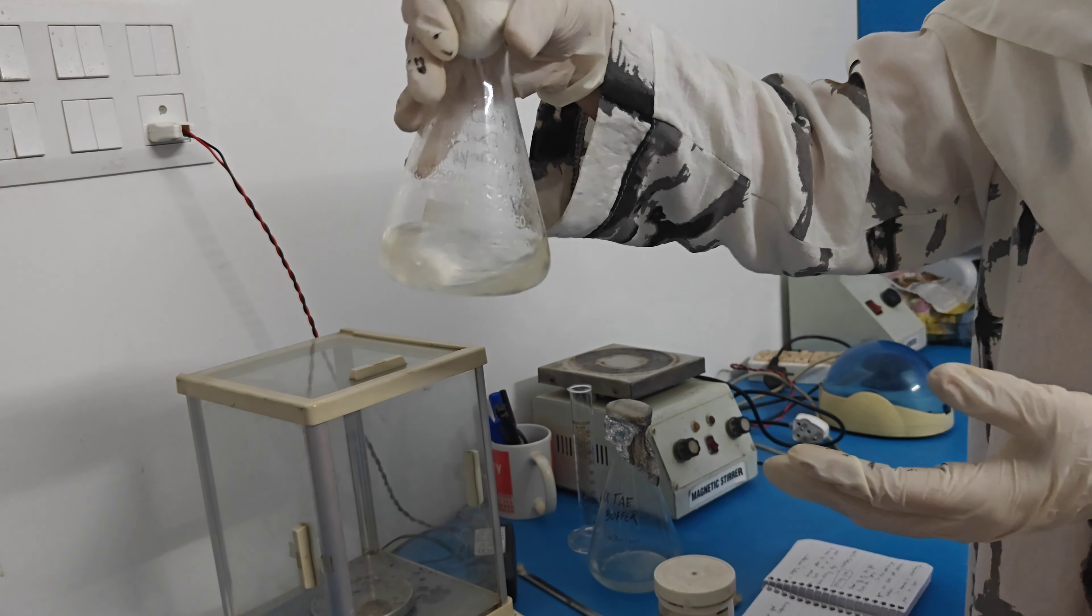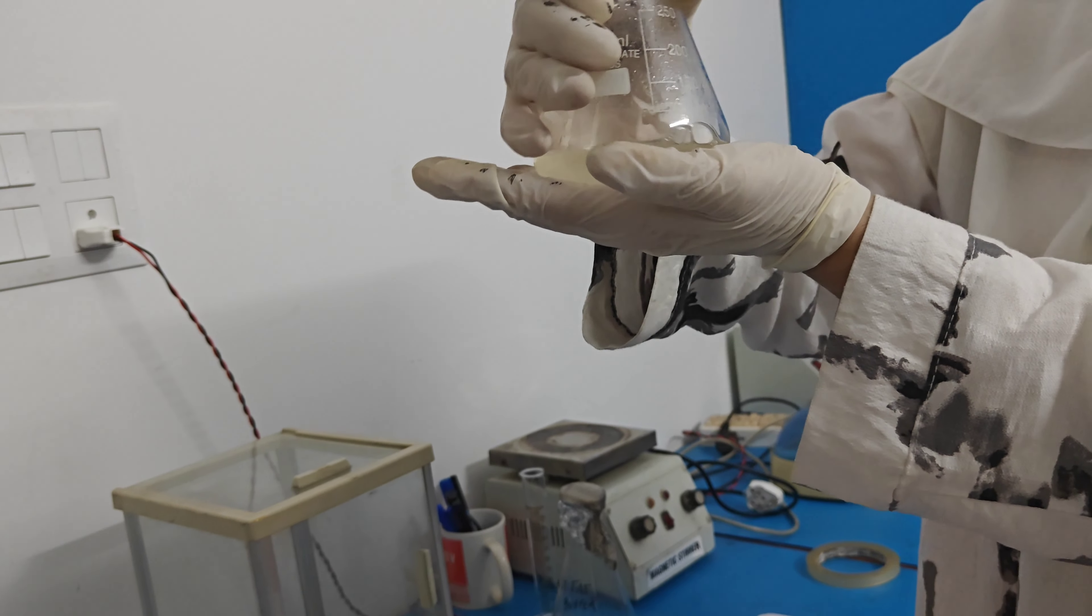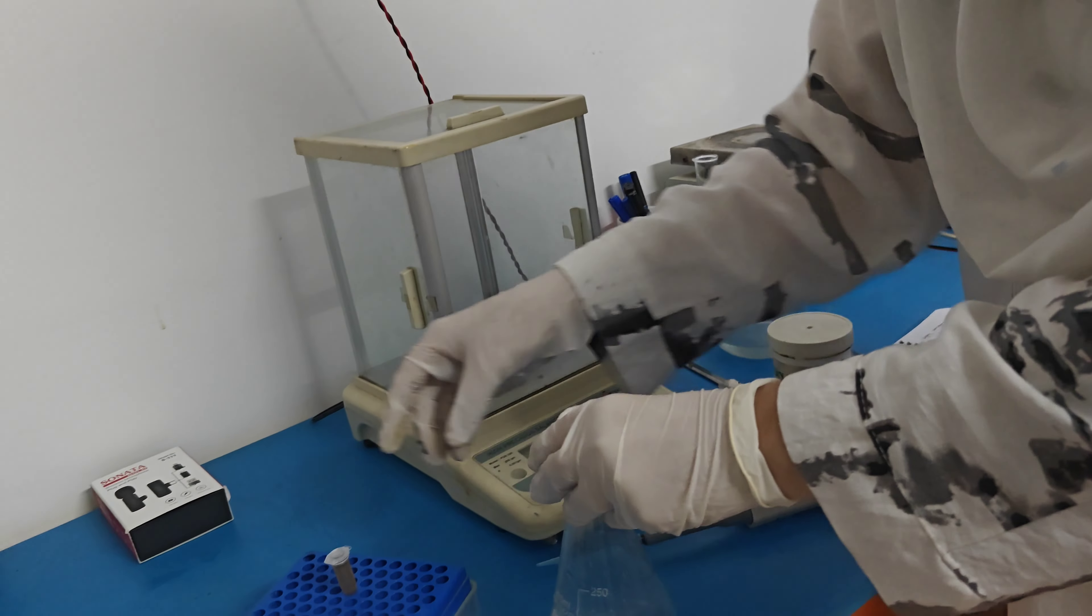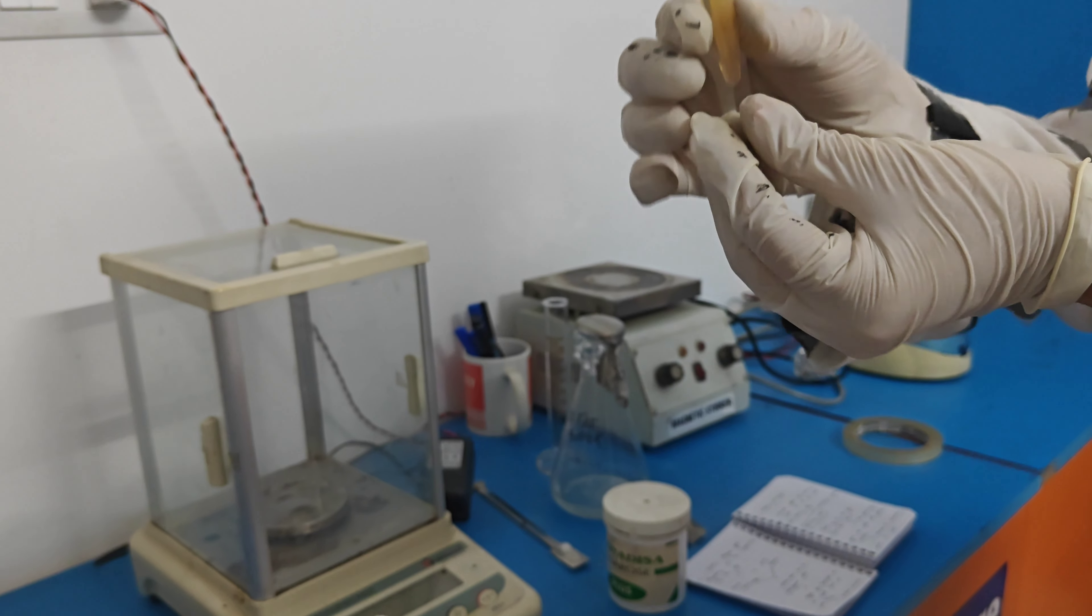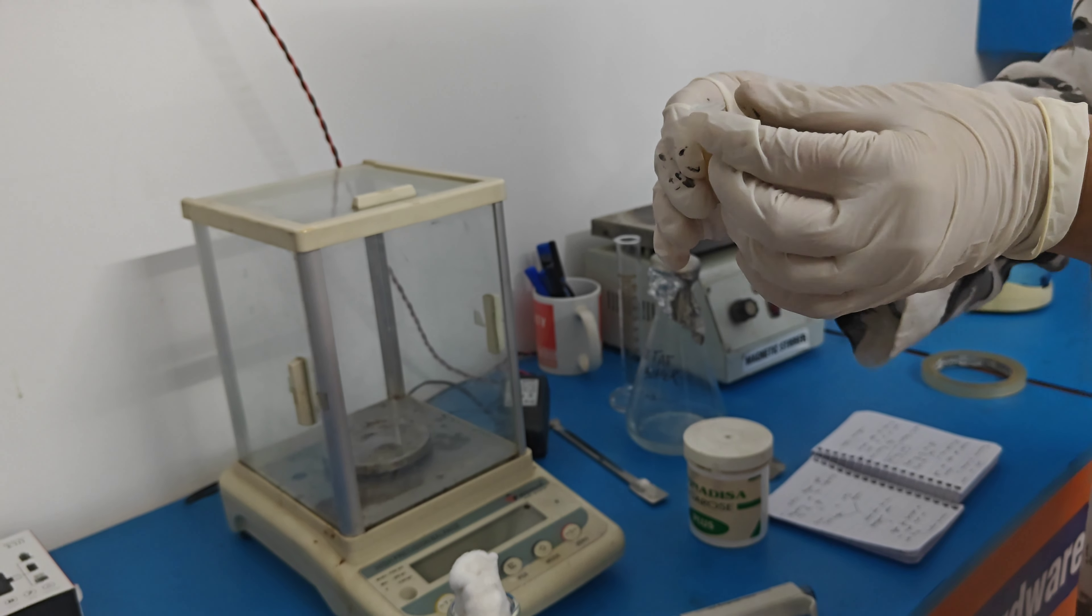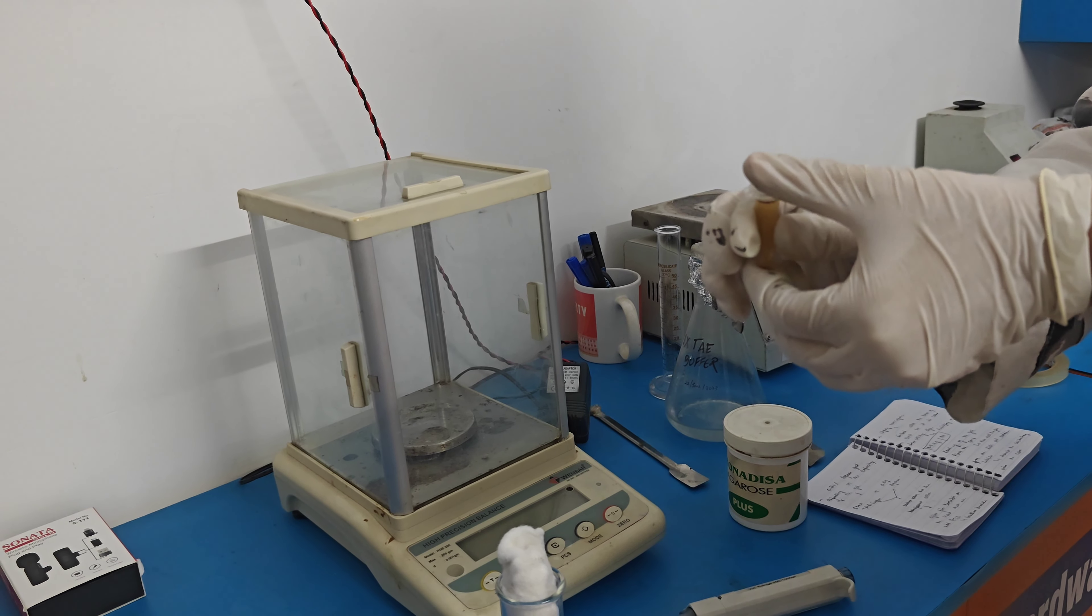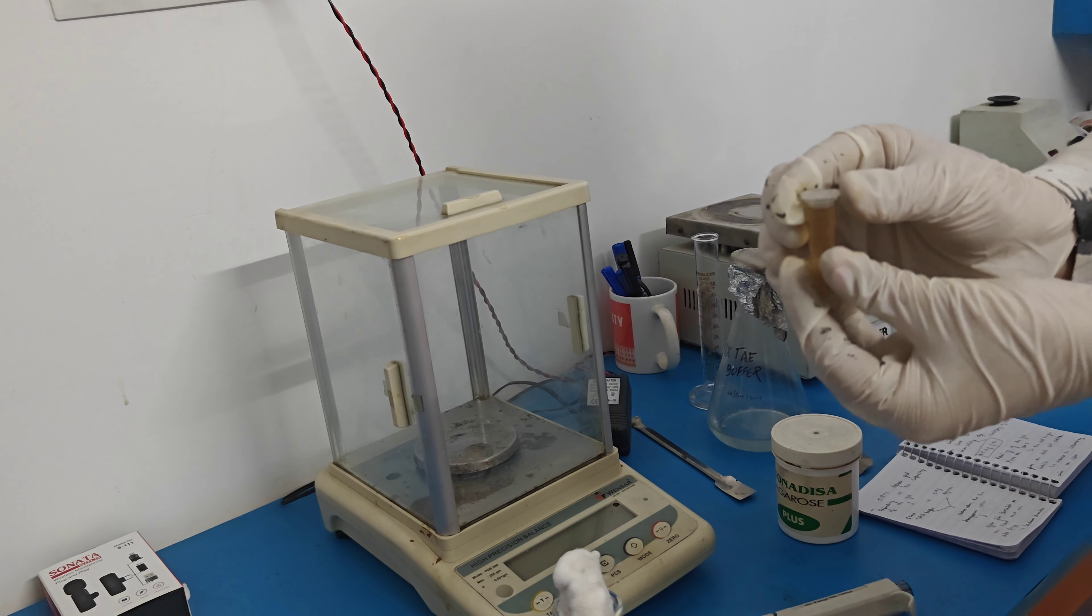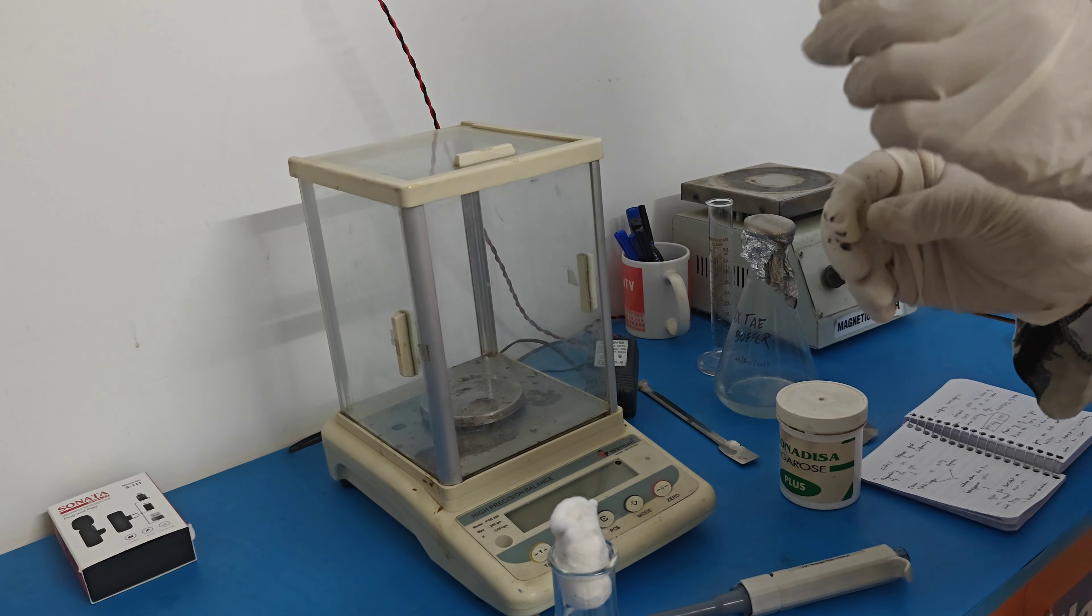Here our agarose gel has become transparent. Now it is available to touch. Now we add ETBR. What is ETBR? ETBR is ethidium bromide. It is highly carcinogenic, that's why I am wearing a glove. Before handling ETBR always wear a glove. ETBR binds with the base of the DNA, so it is called intercalating dye. It is used for the visualization of the DNA.